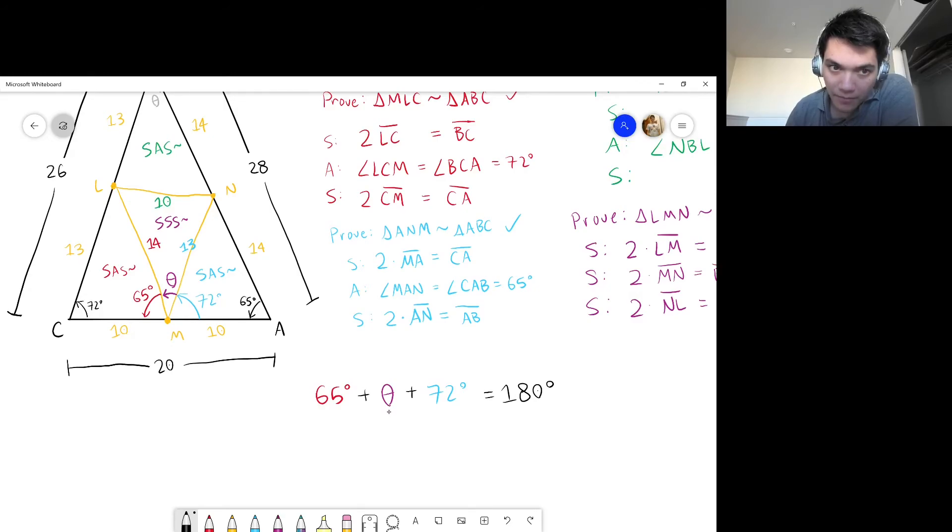So, 65 degrees plus theta plus 72 degrees, all of that adds up to 180. But here's the thing. That means that we can easily find theta by just subtracting the other two numbers from 180. So, theta equals 180 degrees minus 65 degrees minus 72 degrees or 43 degrees.